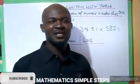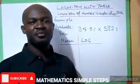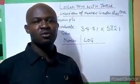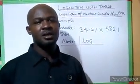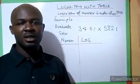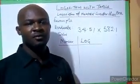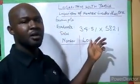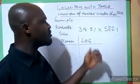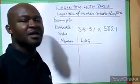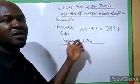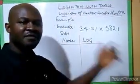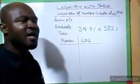Today we are going to be looking at logarithm tables. A logarithm table is useful when you don't have a calculator. I'm going to show how to solve mathematical operations without using a calculator. For example, on the board it says evaluate 34.54 multiplied by 582.1. If you want to solve this without a calculator and you have a four-figure table, it's very simple.